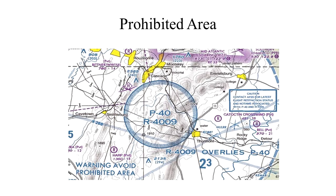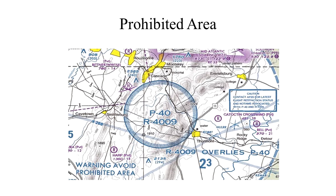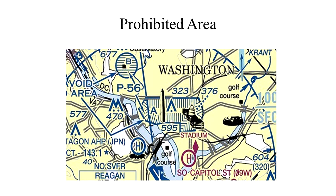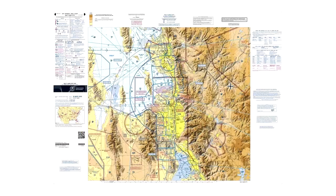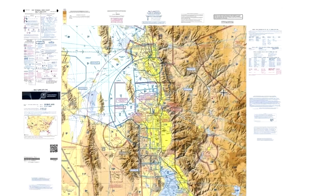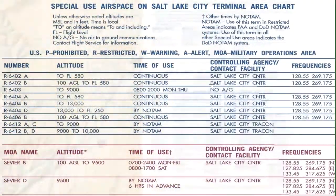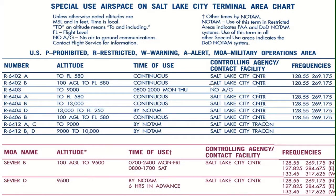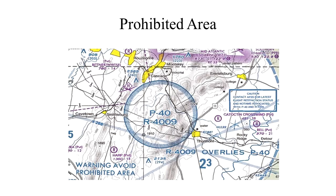Prohibited areas contain airspace of defined dimensions within which the flight of aircraft is prohibited. You will never be allowed to fly into a prohibited area — prohibited areas are just that: prohibited. Such areas are established for security and other reasons associated with national welfare. These areas are published in the Federal Register and are depicted on aeronautical charts, charted as a P followed by a number, like P40.